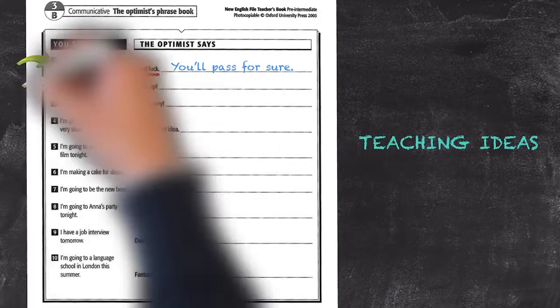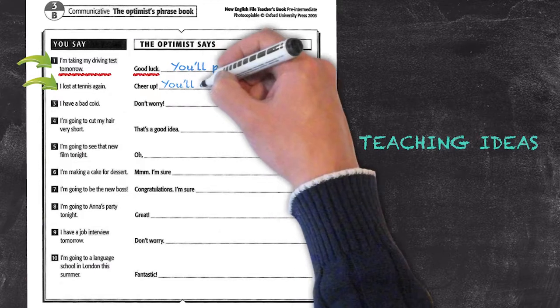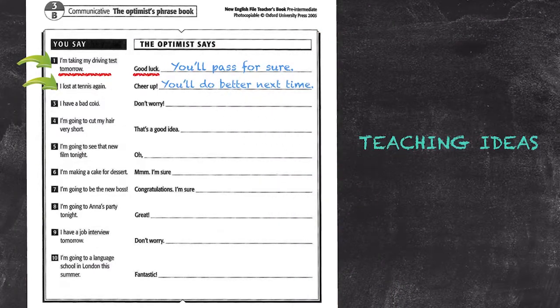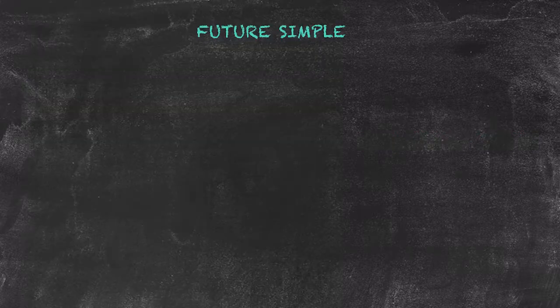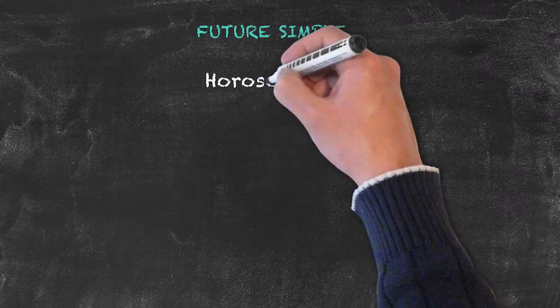I lost at tennis again. Cheer up, you'll do better next time. And so on and so forth. Of course, having a bit of feedback at the end. Some additional ideas for the future simple tense include things like horoscopes.